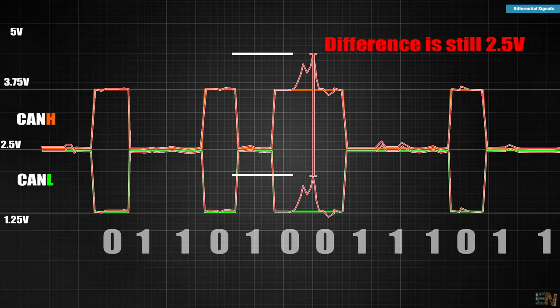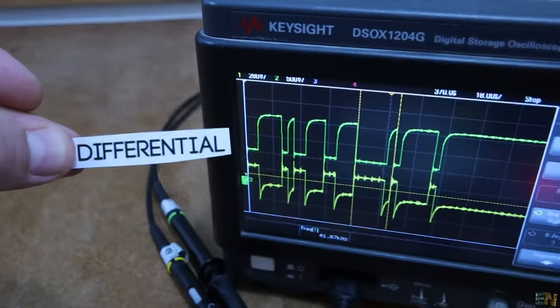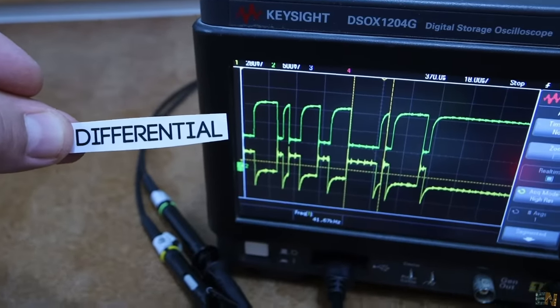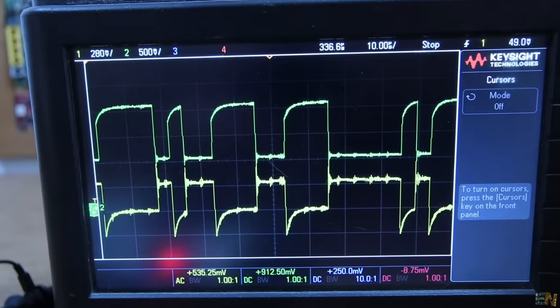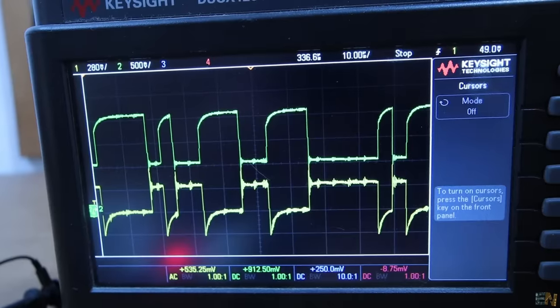Pretty cool, right? That's why we get these shapes on the oscilloscope for differential level communication where we don't read the signal voltage but the voltage difference between 2 signals.